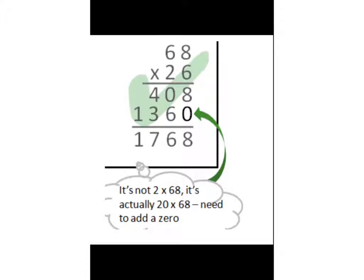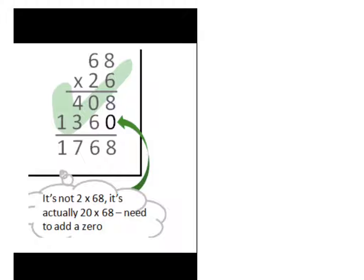All right, and last but not least, we have the standard algorithm for multiplying a 2-digit number times a 2-digit number. So here we have 68 times 26. What we did first was we multiplied 8 times 6, which is 48. We carried the 4. 6 times 6 is 36, plus 4 is 40. So we added that here. And now when we got into our next digit, 2, we had to make sure to put the 0 in the ones place because we're now in the tens place.